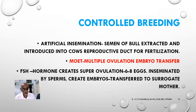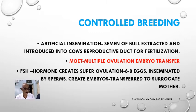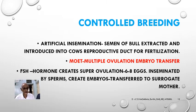Controlled breeding is carried out by veterinary doctors and specialists through artificial insemination. Semen from a superior bull is extracted and introduced into the reproductive tract of a superior female. The fertilized egg — the zygote — is then made to grow inside the genetic mother, the female which receives the semen from the bull. This is another method for obtaining very good breeds.